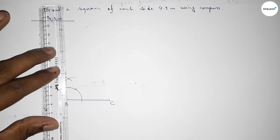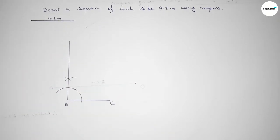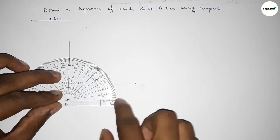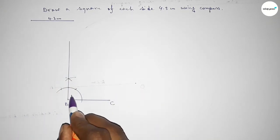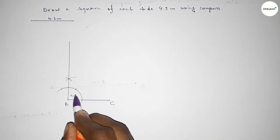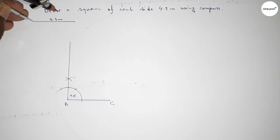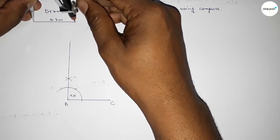Joining this line to get a 90-degree angle. Checking the angle — this is perfectly a 90-degree angle. Now taking the length 4.3 centimeters using the compass.